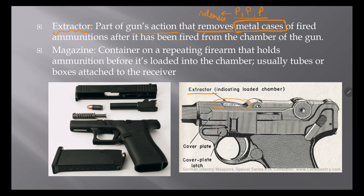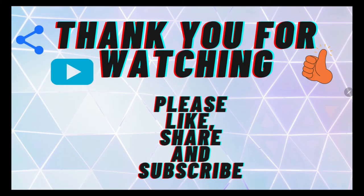Then comes the magazine. It is a container on a repeating firearm that holds ammunition before it is loaded into the chamber. The magazine is inserted into the gun and the ammunition is fired from it. I hope you understood what ballistics is and what the different parts of a firearm are. If you found the video useful, please like, share, and subscribe to my channel.